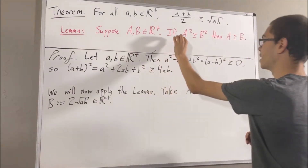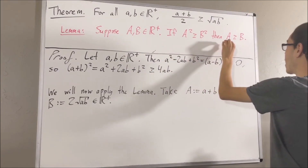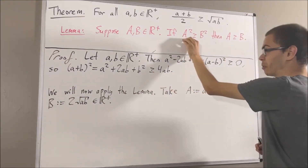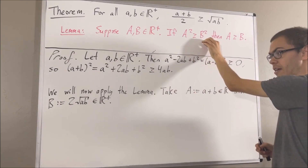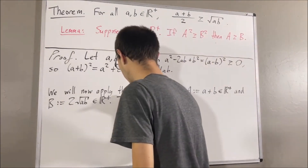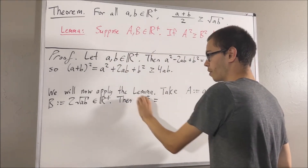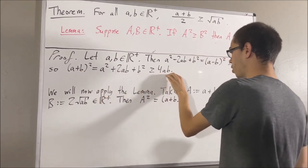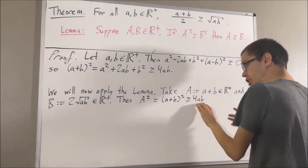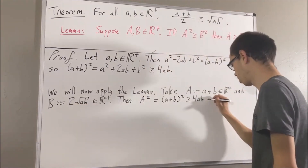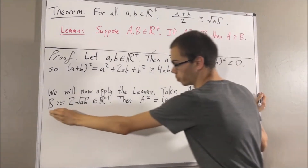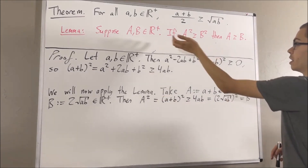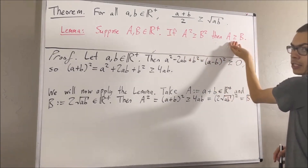The lemma tells us that if capital A squared is greater than or equal to capital B squared, then capital A is greater than or equal to capital B. It turns out this inequality tells us that capital A squared is greater than or equal to capital B squared. We know that capital A squared is equal to a plus b squared, and this inequality tells us that a plus b squared is greater than or equal to 4ab. But 4ab is precisely the square of 2 times the square root of ab, which is just equal to capital B squared. So, capital A squared is greater than or equal to capital B squared, and by the lemma, capital A is greater than or equal to capital B.